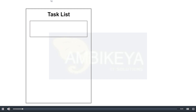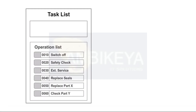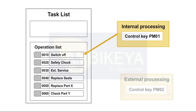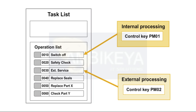The control key defines whether an operation is to be processed internally or externally. Additional control parameters are set that are important for operation processing — for example, if the operation should be included in scheduling, subjected to costing, confirmed, or printed, among others. Control keys are maintained in customizing.